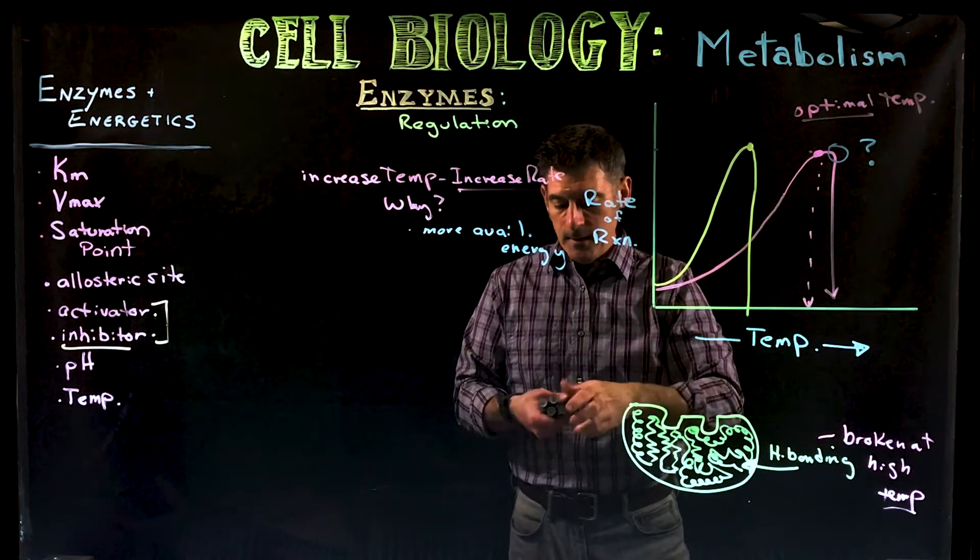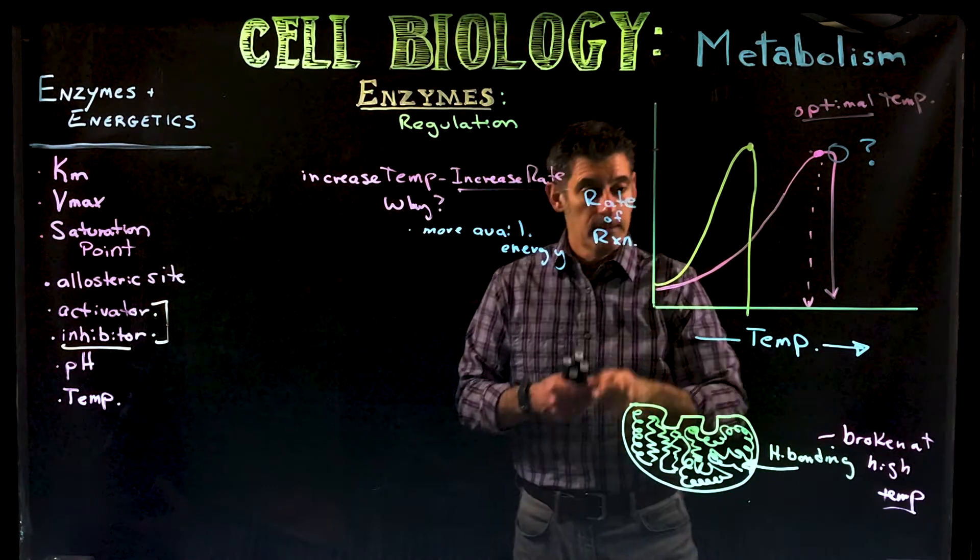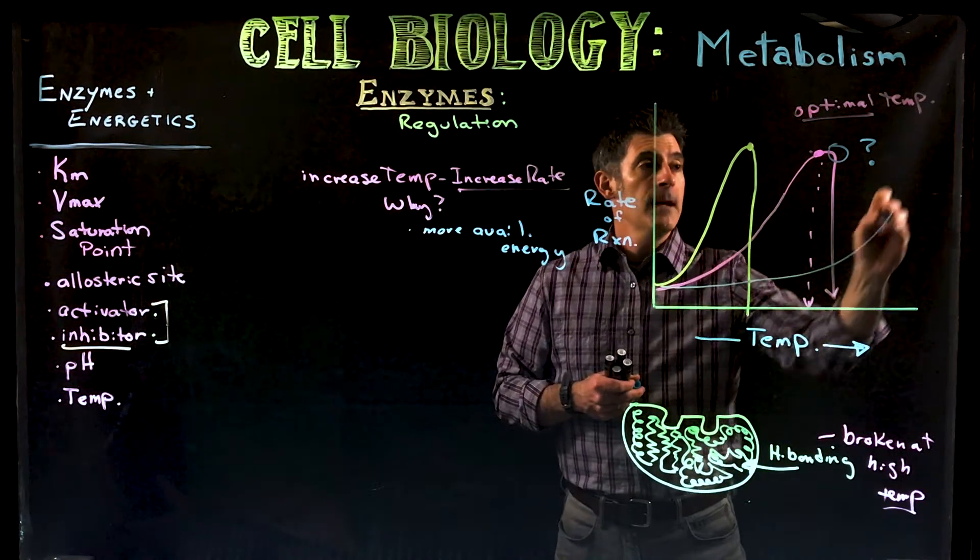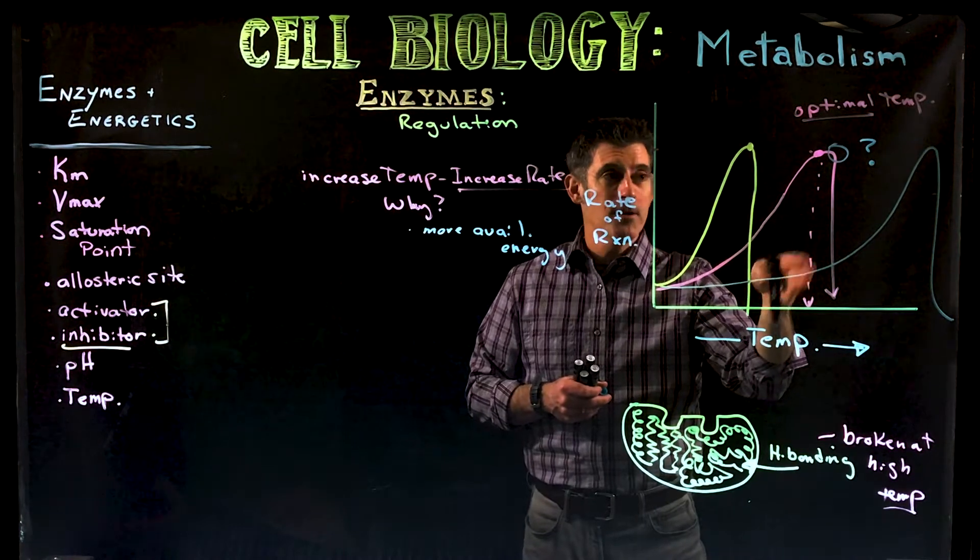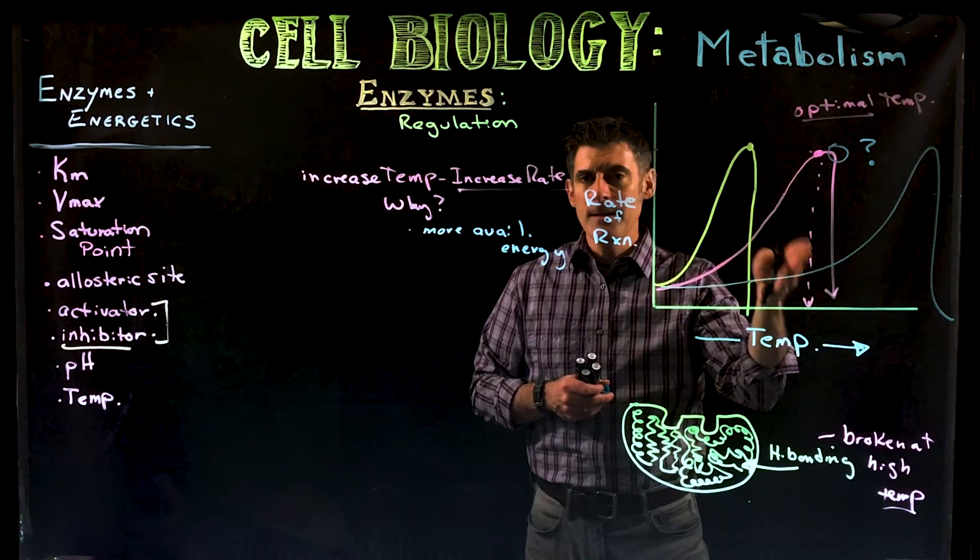And other organisms who live, say, in hot springs, they can have actually very high optimal temperature. So, say, our body temperature, there's almost nothing going on in these cells.